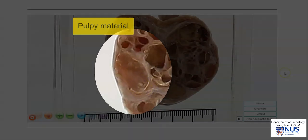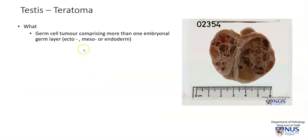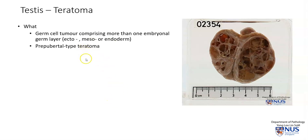Let's learn a bit more about testicular teratoma. Teratomas are germ cell tumors that comprise more than one embryonal germ layer — the layers are ectoderm, mesoderm, or endoderm. There are two types of teratoma. There is the prepubertal type teratoma, which is considered an indolent tumor, and this is not associated with germ cell neoplasia in situ (GCNIS).